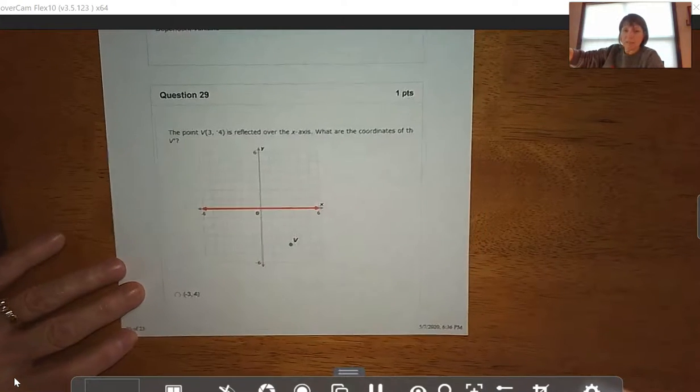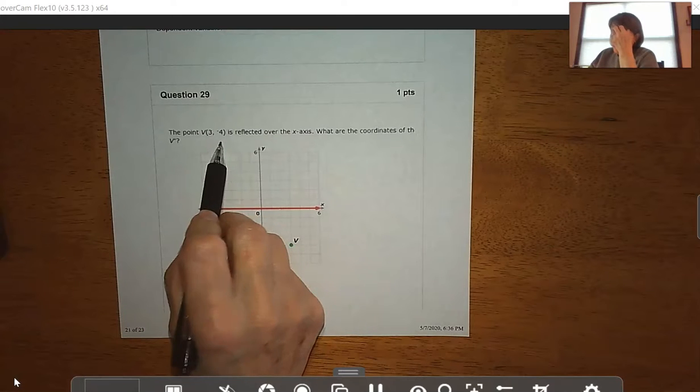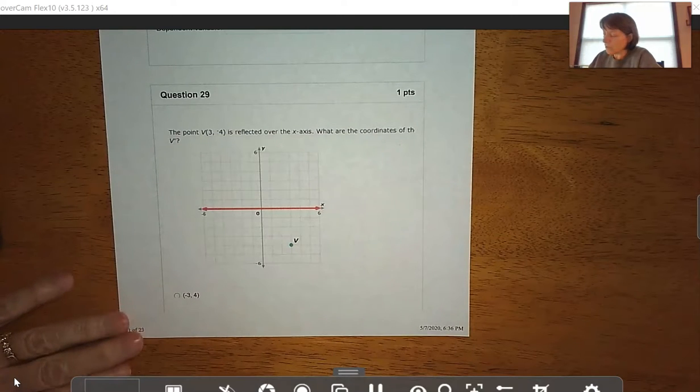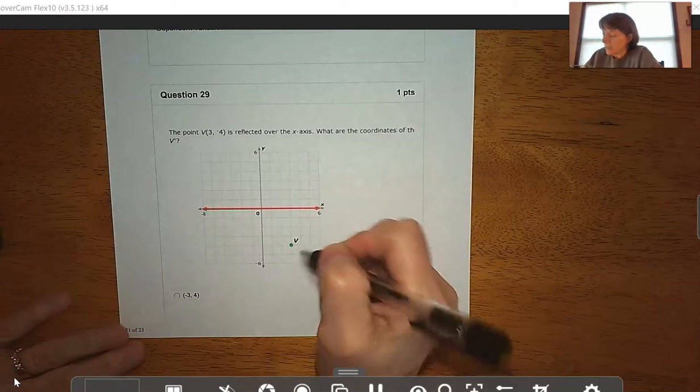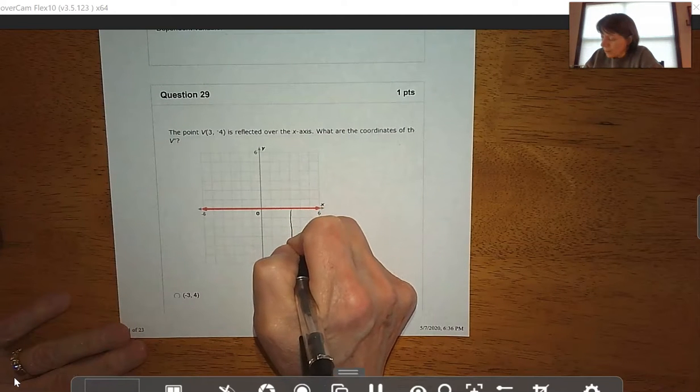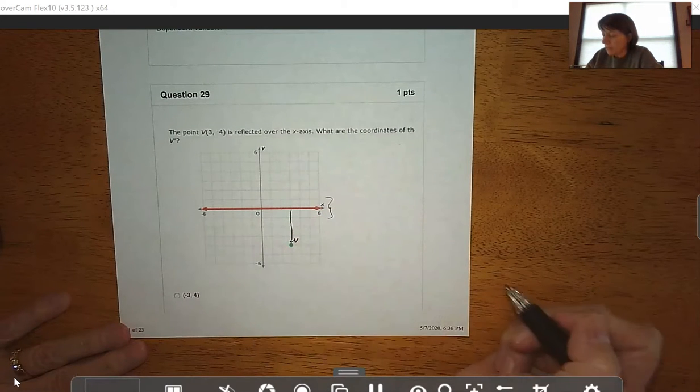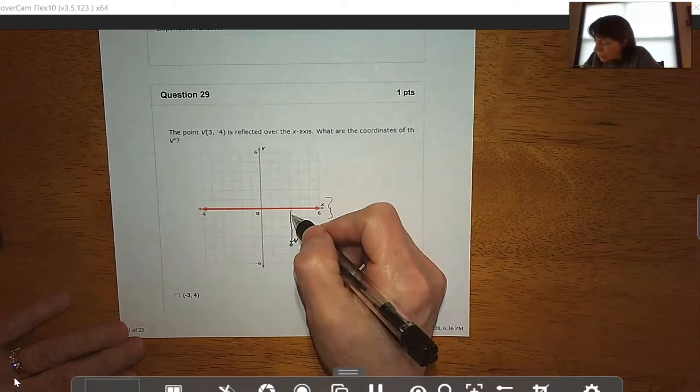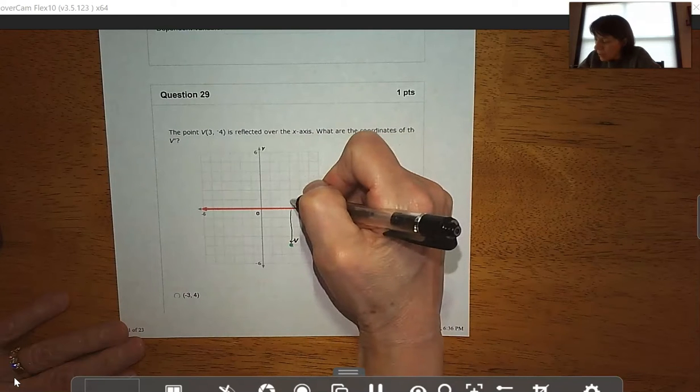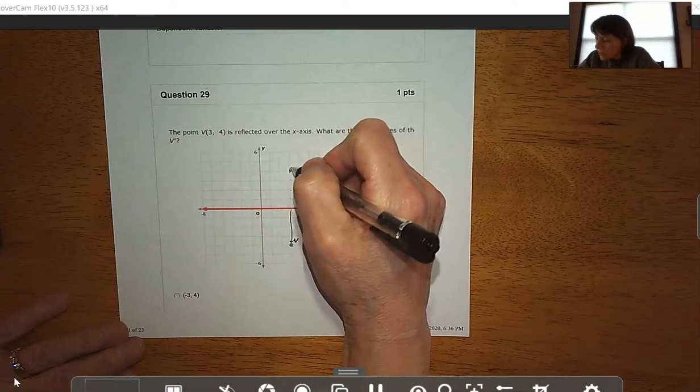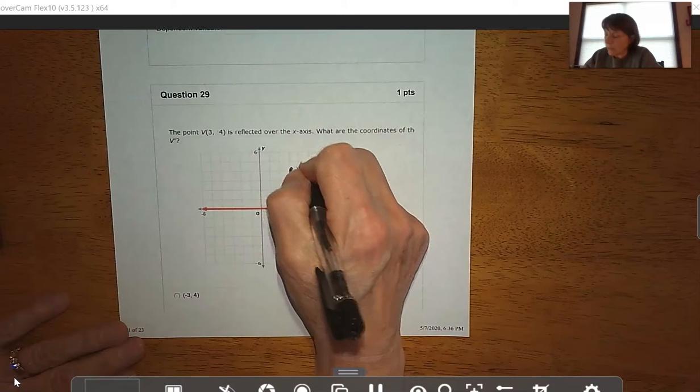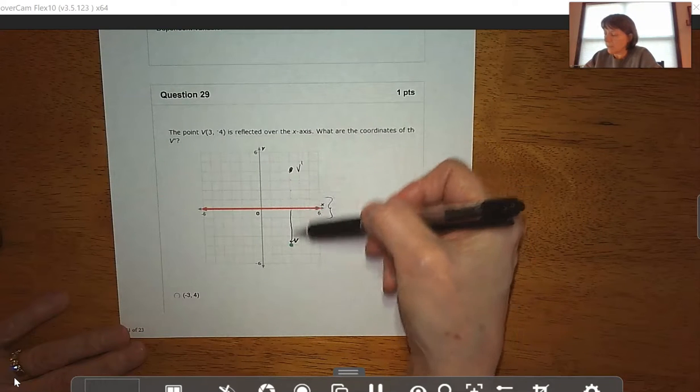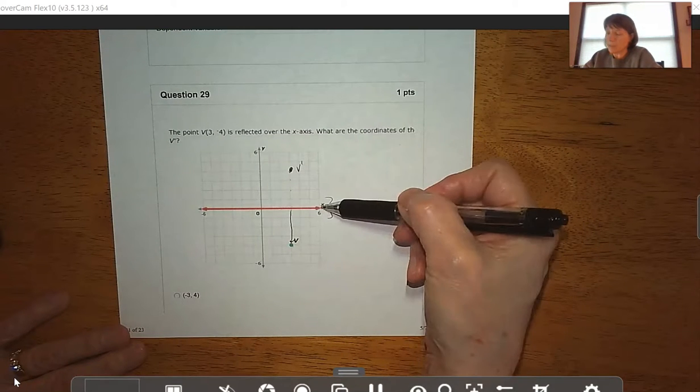Question 29 says, the point V is (3, -4), and we want to reflect it over the x-axis. What are the coordinates of the new point? Some of you struggled with this in the practice, and really guys, you're just taking this point, and since it says over the x-axis, which is highlighted in red, you're going to move it up the same number of spaces away from the x-axis. So this is 1, 2, 3, 4 down. On this same line, I'm going to move it up 1, 2, 3, 4. This is the point V prime. That's the reflection of V over this line - the same number of spaces on the same line, away from x, but in the opposite direction.